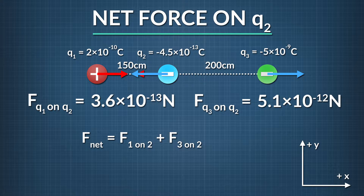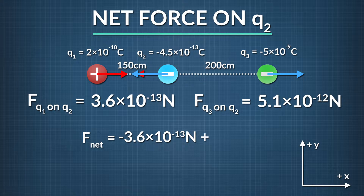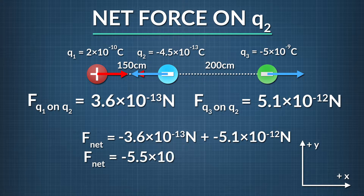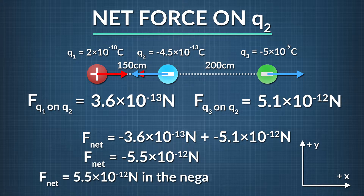The force of q1 on q2, negative 3.6 times 10 to the negative thirteenth newtons, plus the force of q3 on q2, negative 5.1 times 10 to the negative twelfth newtons, equals negative 5.5 times 10 to the negative twelfth newtons, or 5.5 times 10 to the negative twelfth newtons pointing in the negative x direction.